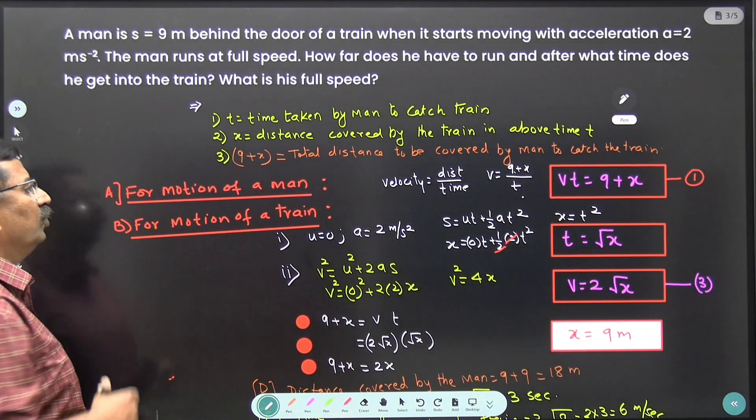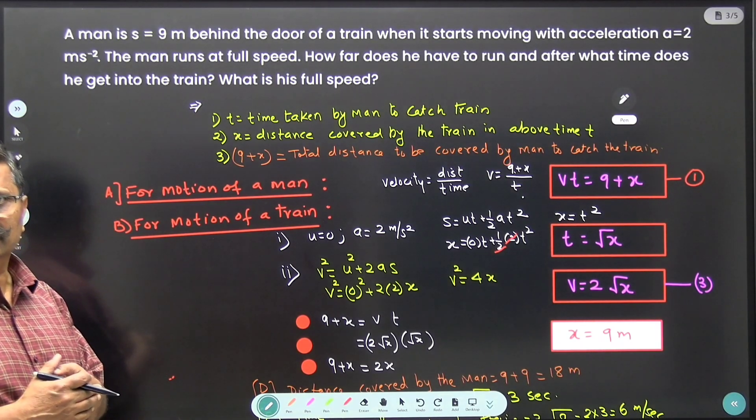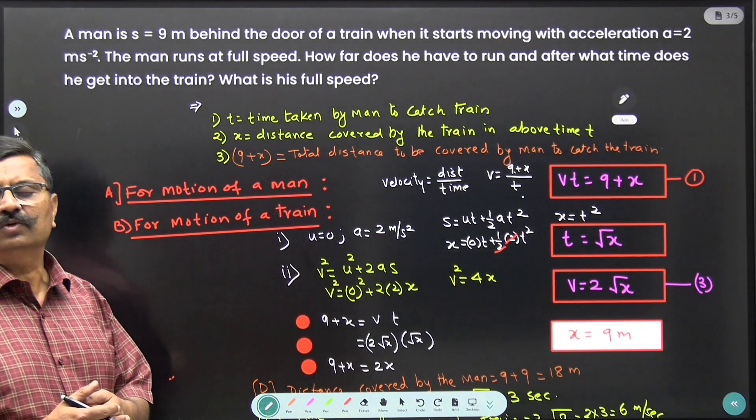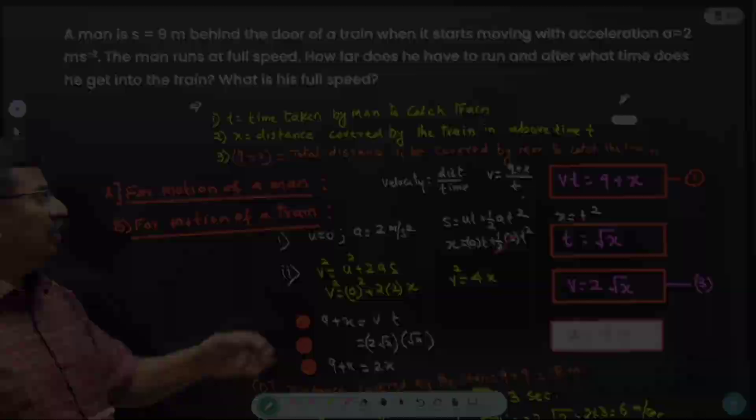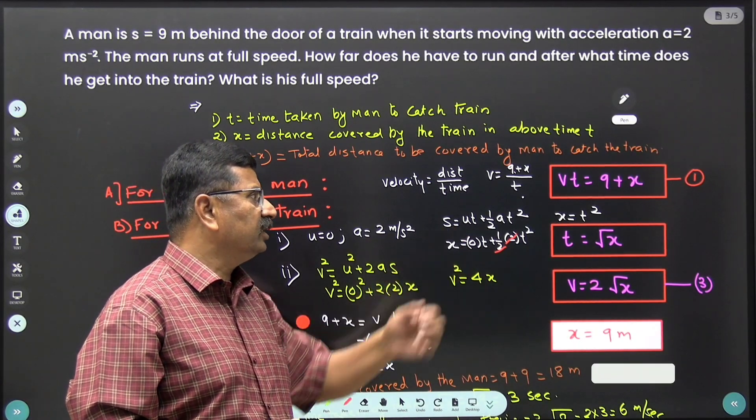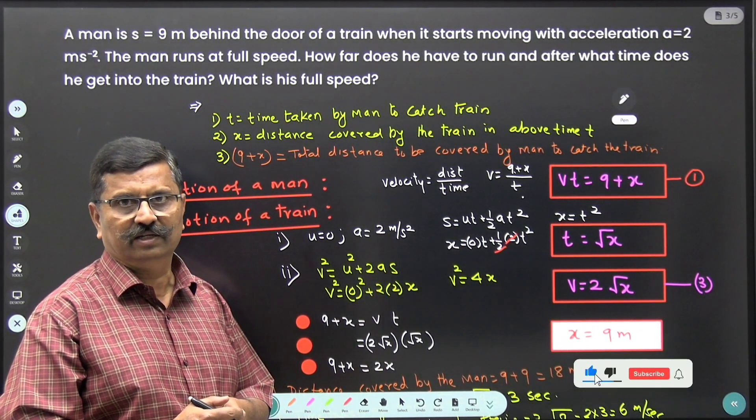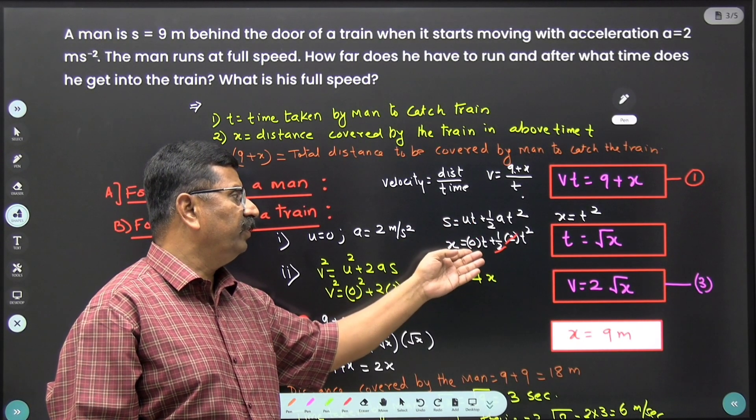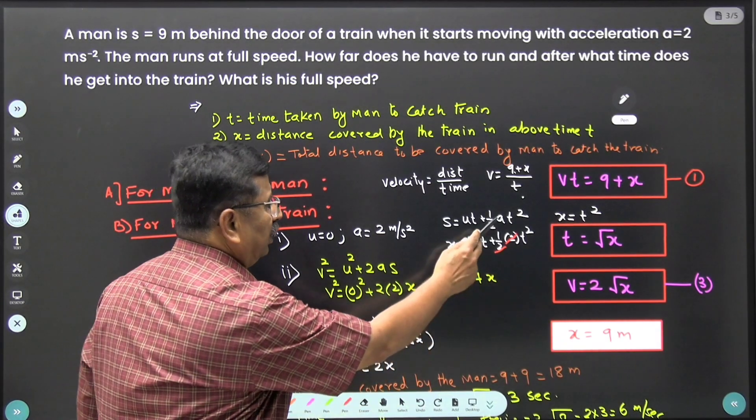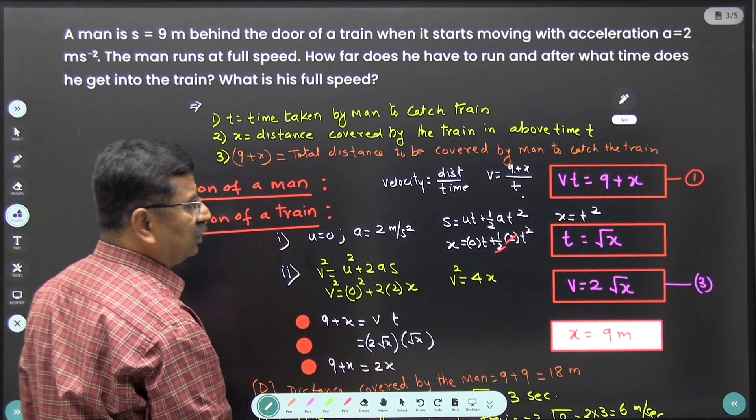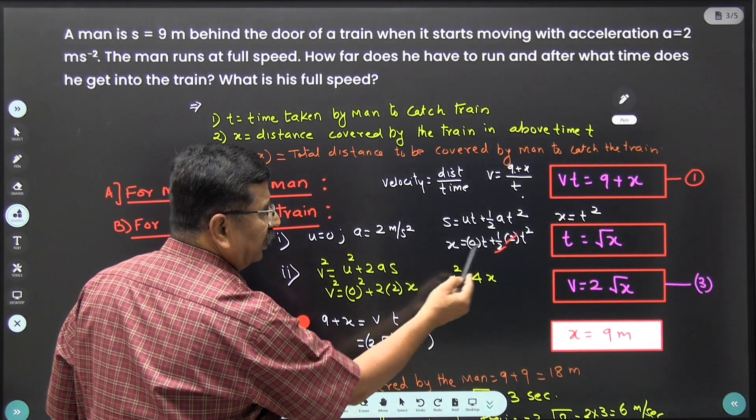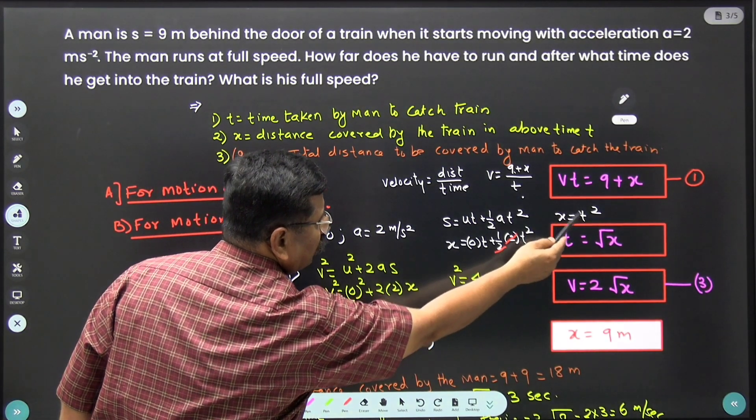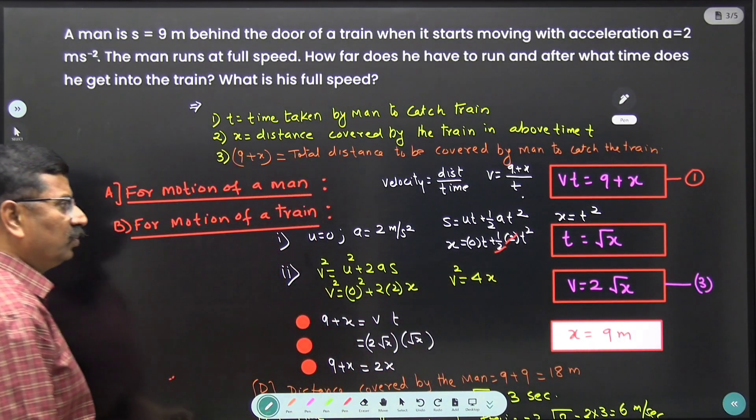Now see for the motion of a train. Initial train is at rest. Therefore, u is equal to 0 and acceleration of the train is a is equal to 2 meter per second square. We will use the kinematic equation s equal to ut plus half at square. So distance s is the x. Initial velocity is 0. Then a is equal to 2 meter per second square. So this 2 and 2 will get cancel. I will get x equal to t square. Therefore t is equal to root x.